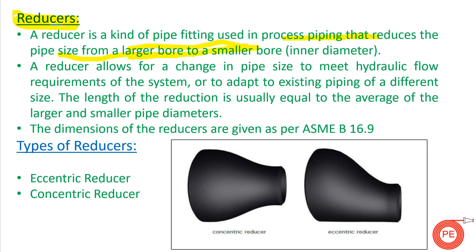When it is reducing the size from larger bore to smaller bore it is known as a reducer. When used in reverse — from smaller bore to larger bore — it is known as an expander. Reducer and expander are essentially the same fitting; the orientation of usage determines whether it is called a reducer or an expander.